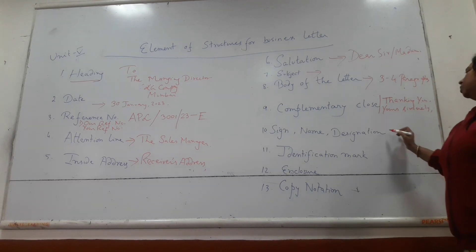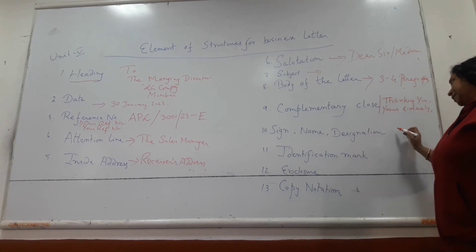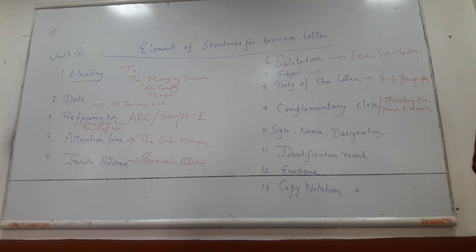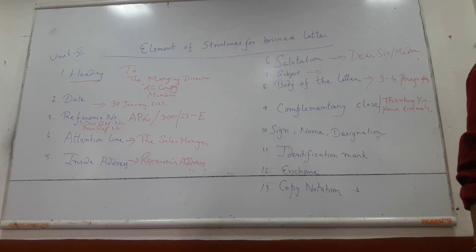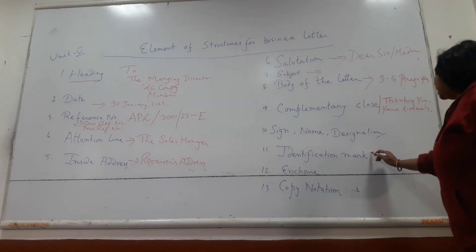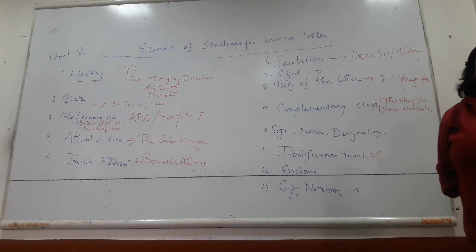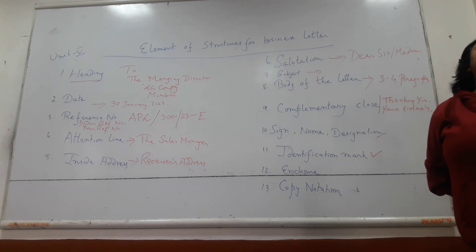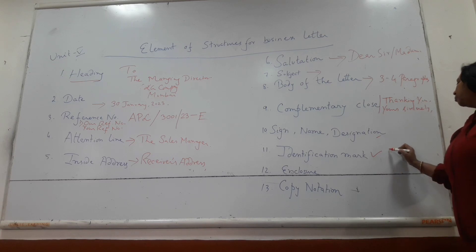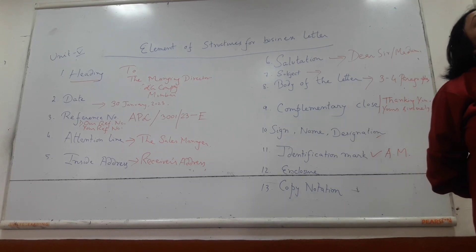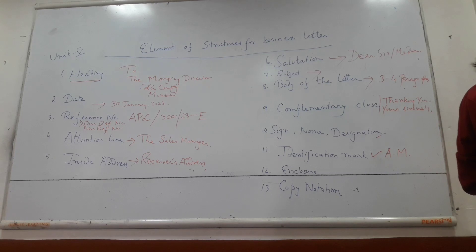After that, we will have to write the signature of the writer, then the name, then the designation. Designation means the business letter is written in two ways: one side it will be the purchase manager, the other side it will be the sales manager. Then comes the identification mark. The identification mark is the initials of the writer's name. Suppose the name of the business letter writer is Ankit Mishra, then we will write A.M. So the identification mark is the initials of the business letter writer.